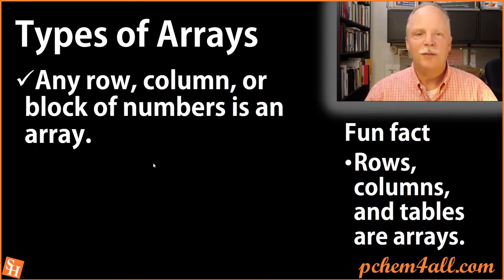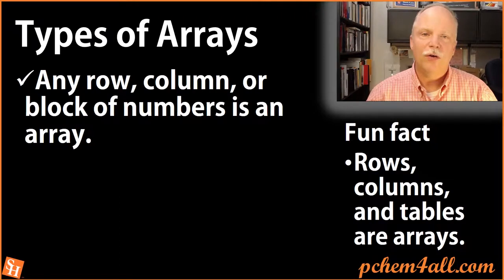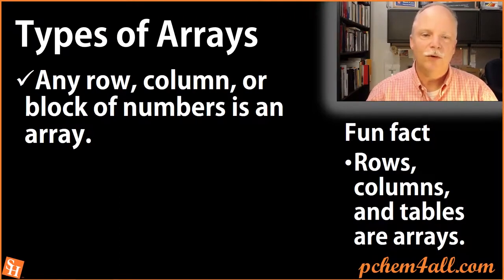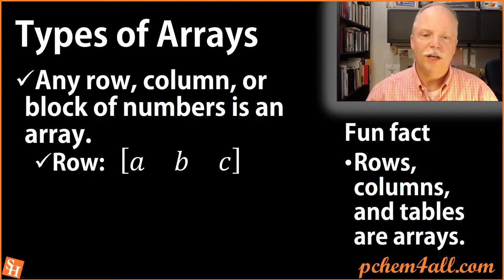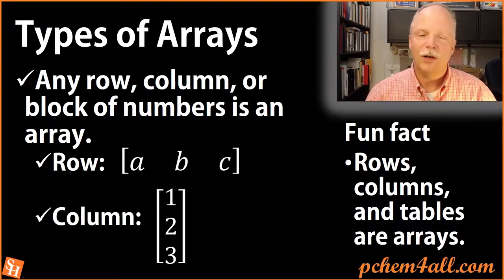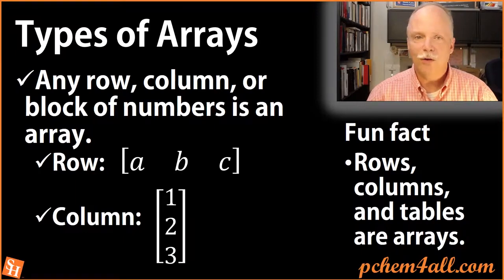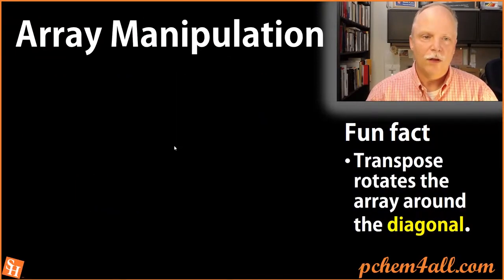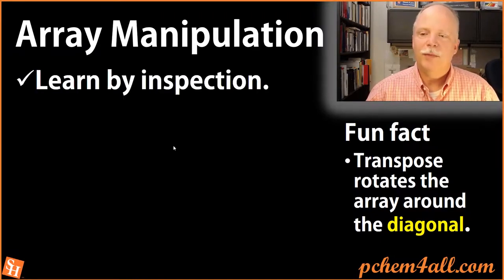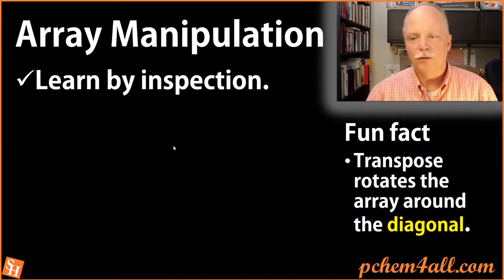There are different types of arrays. You might have a row or a column of numbers, or any block like a table — that number or block of numbers is an array. So you could have three numbers in a row or in a column; those are both arrays. One's a row array and the other is a column array. You can manipulate these, so let's learn about the transpose function.